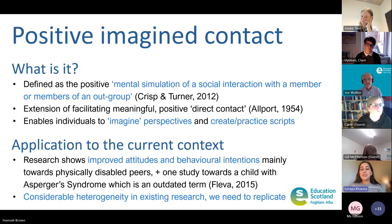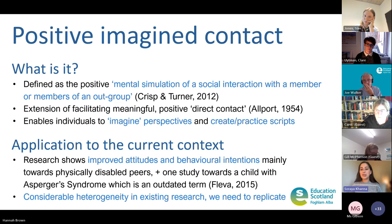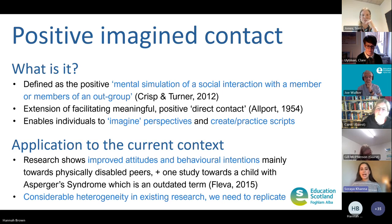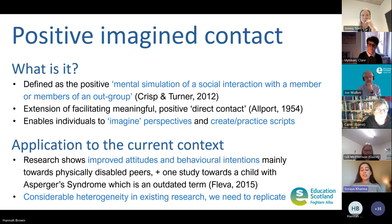One way that we can intervene more systemically is through an intervention called imagined contact. This is an extension of direct contact, based on Allport's intergroup contact theory, and it's defined as the mental simulation of a social interaction with a member or members of an out-group. Imagining positive contact can help individuals to imagine the perspective of others and help to create and practice scripts. Imagined contact really lends itself to younger children, as it's very simple and helped by strong imaginations. There has been a recent increase in studies showing success in promoting children's attitudes and behavioural intentions, but this research is mainly towards physically disabled peers.